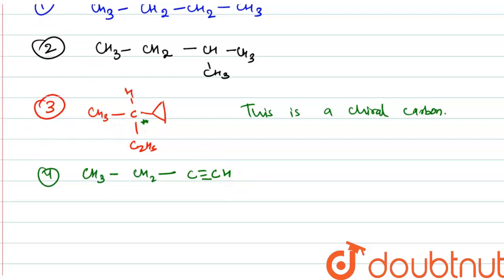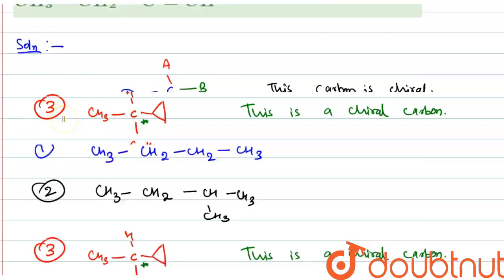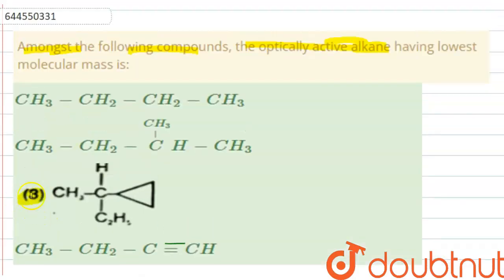So there is only one compound which is option number 3. This is a chiral compound which can show optical activity, and since this is the only chiral compound, this has the lowest molecular mass as well.